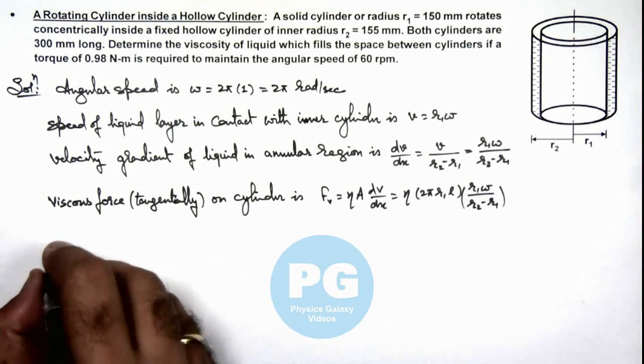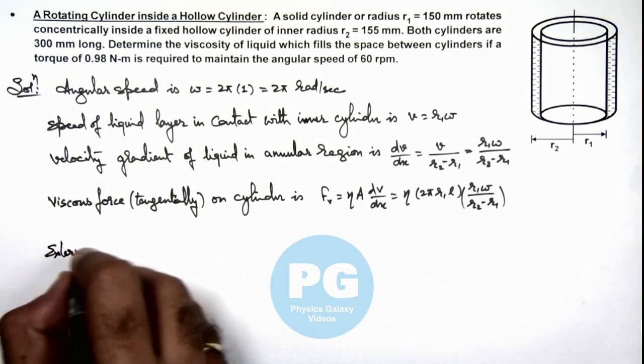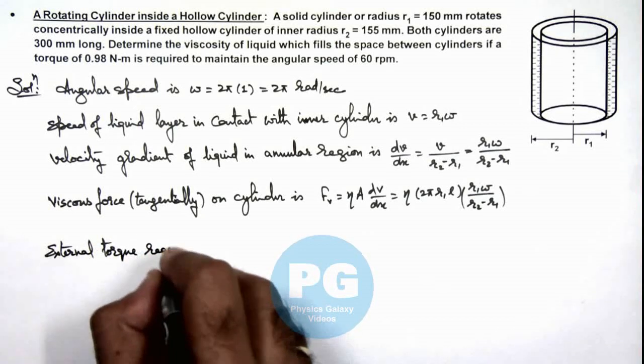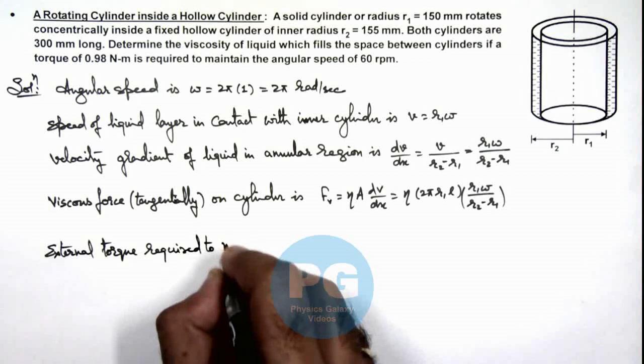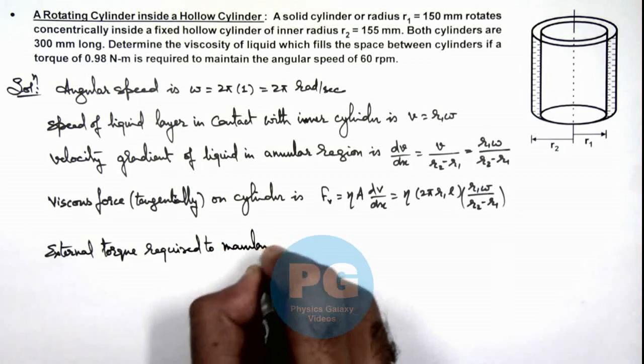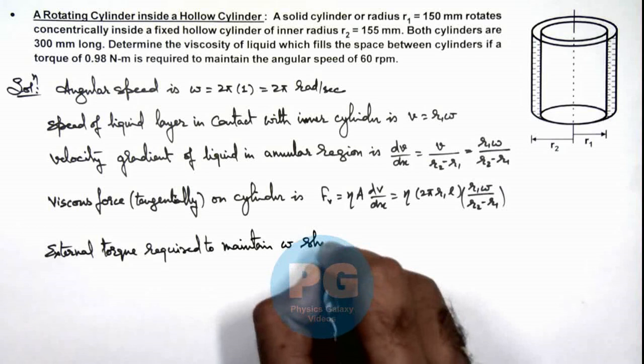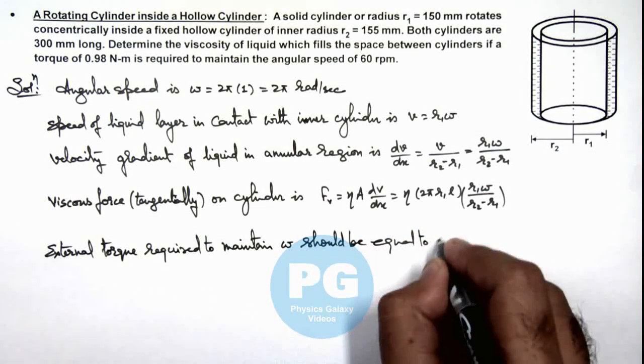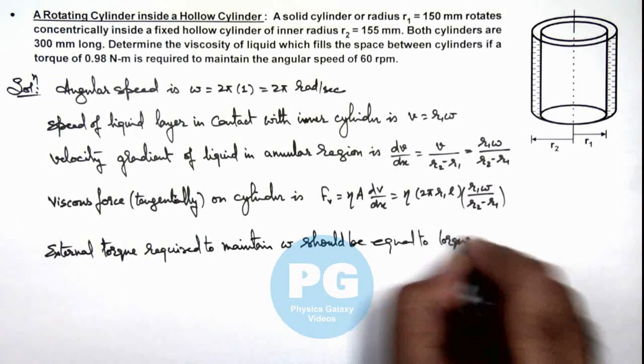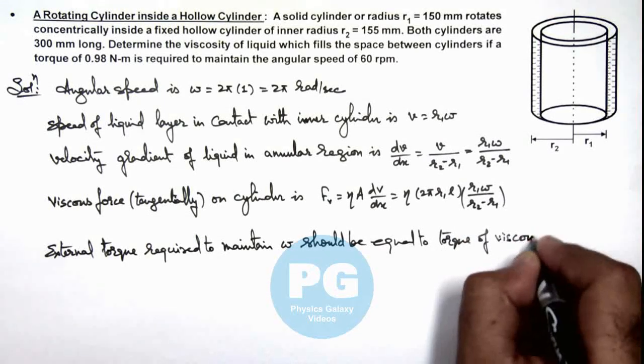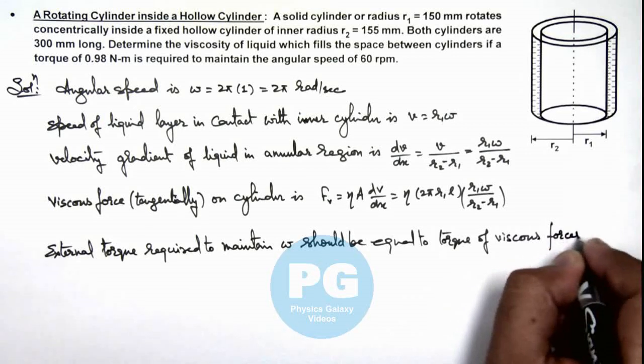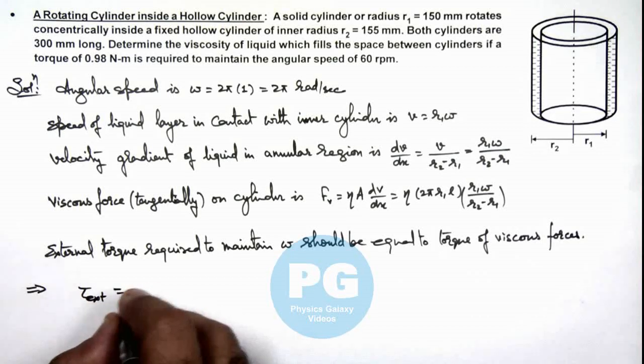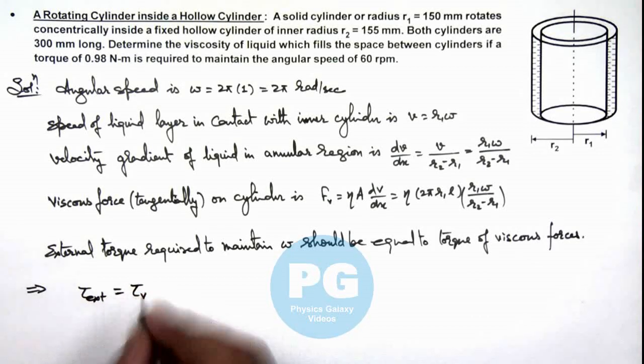So here we can write: the external torque required to maintain omega should be equal to torque of viscous forces. This implies the external torque is due to the opposite viscous force torque, and that will be equal to viscous force multiplied by r1.